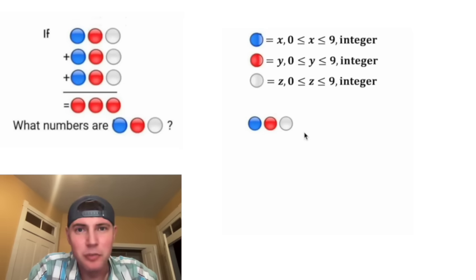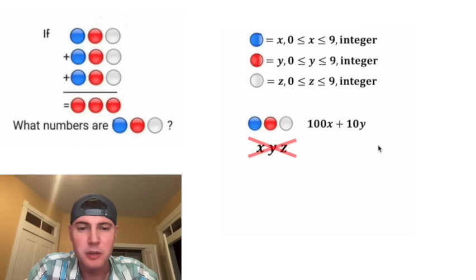If we want to plug this into Wolfram Alpha, we can't just put x, y, z, because Wolfram Alpha will automatically multiply these. So the correct way to do this, the x is in the hundreds place, so this will be 100x. The y is in the tens place, so this will be plus 10y. And then the z is in the ones place, so it'll be plus z.